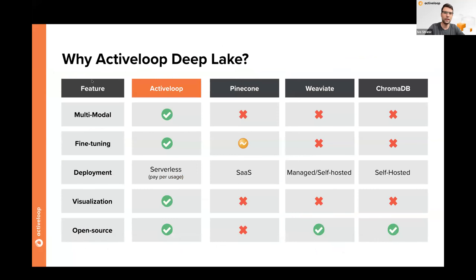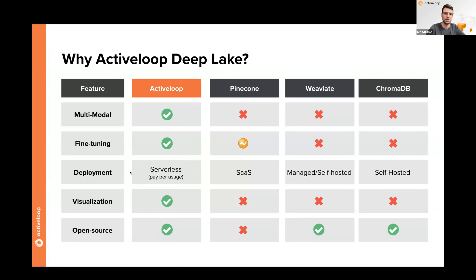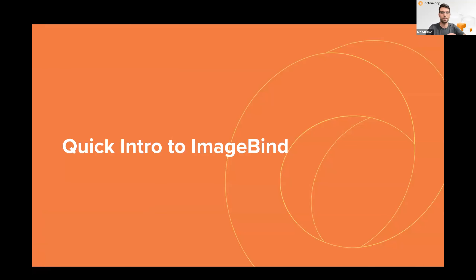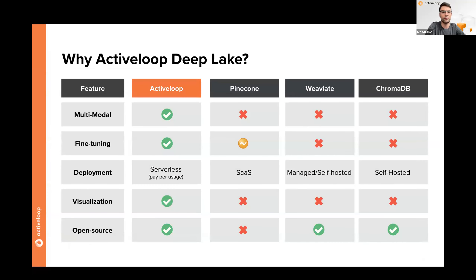The key differentiators of Deep Lake compared to other vector databases: first, it's multimodal; second, it provides fine-tuning tooling — you can run vector search in a live application or fine-tune a model from the same data lake; third, deployment is serverless, making it substantially more economical since there's no fixed provisioned infrastructure running idle. We also provide query engines and visualization on top of the service.